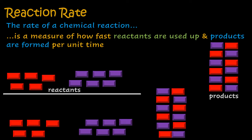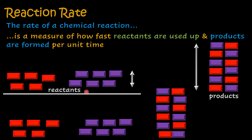Let us also consider two other things that come into play when we look at a chemical reaction. We had a high concentration of reactants initially but end up with a small concentration of reactants remaining. We didn't have products initially, but now we have a high concentration of products. It is worth noting that not all the reactants will be used up — a small amount of reactants will be left in the reaction vessel.